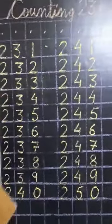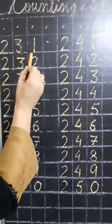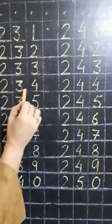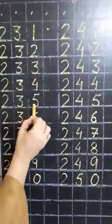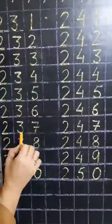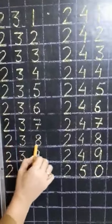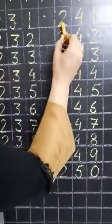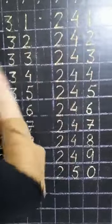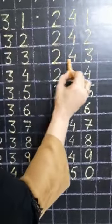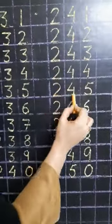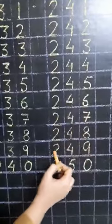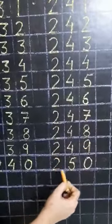So let's revise the counting. And you have to speak after me. 231, 232, 233, 234, 235, 236, 237, 238, 239, 240. Then the next line is 241, 242, 243, 244, 245, 246, 247, 248, 249, and 250.